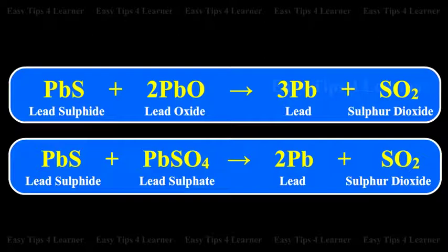PbS + PbO gives Pb + SO2. PbS + PbSO4 gives Pb + SO2.